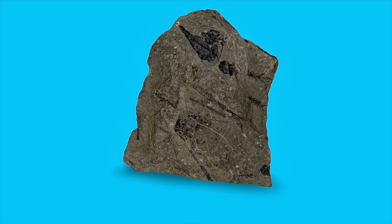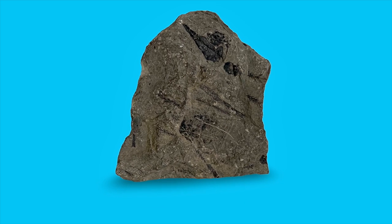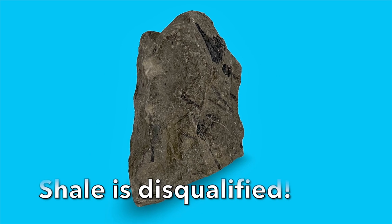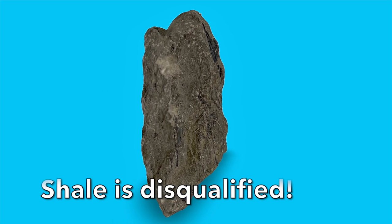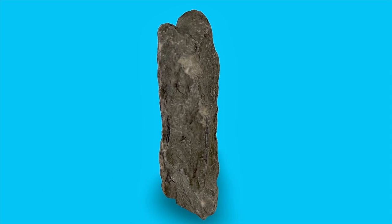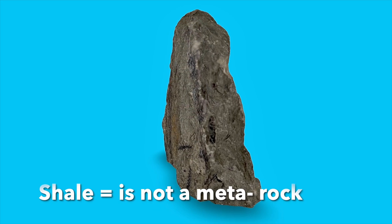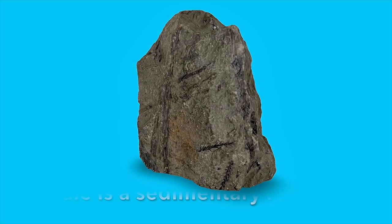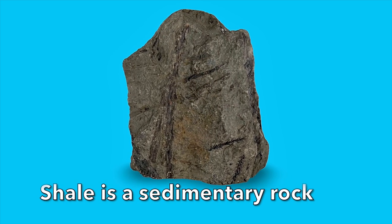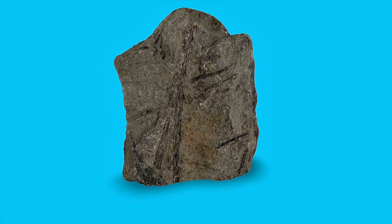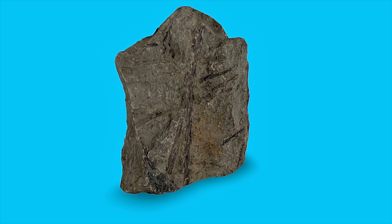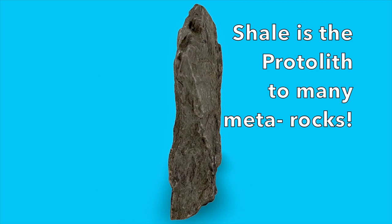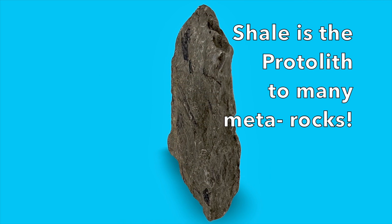Before I identify the real phyllite, let me introduce the contestants. First, the contestant that is not on the quiz: shale. Shale is not a metamorphic rock at all — it is a sedimentary rock made of mud. It is dull, muddy, and may contain fossils, so it is rejected from this metamorphic quiz. But shale is the rock that slate, phyllite, schist, and gneiss often begin from. That is why shale is known as the protolith, or parent rock — the original rock before changes from metamorphism begin.